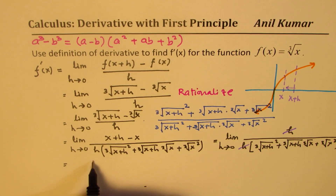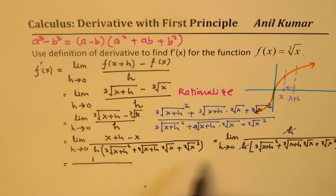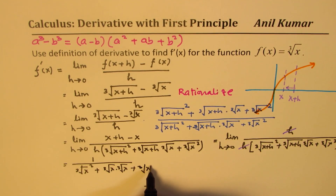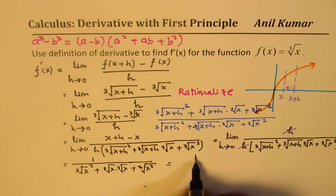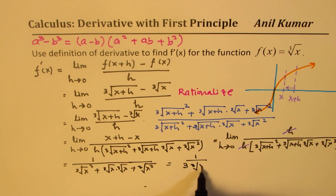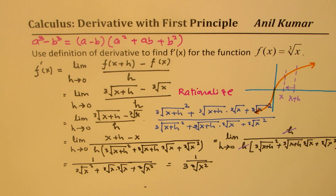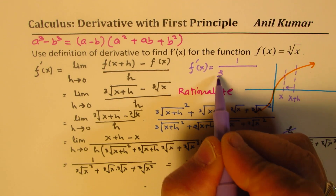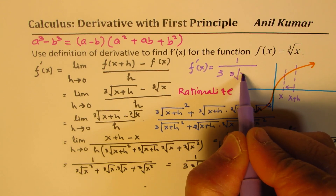So h has been cancelled. Substituting h equals 0, we get (∛x)² plus here we have ∛x times ∛x, plus this is also (∛x)². So that means you get 1 over 3(∛x)². So that becomes the derivative of your function. We can write that f'(x) is equal to 1 over 3·(∛x)².